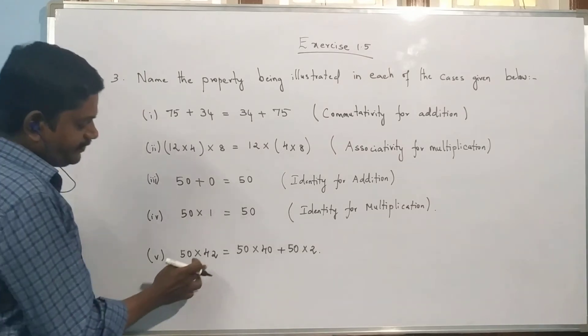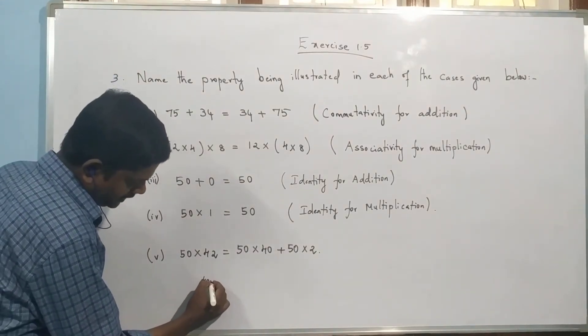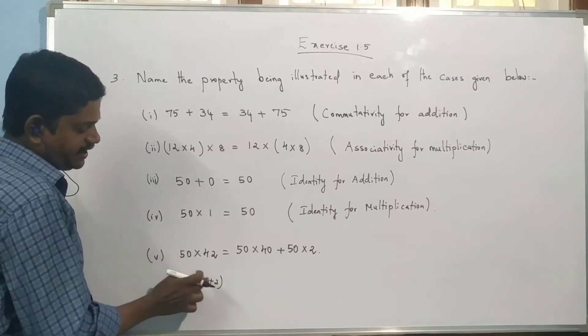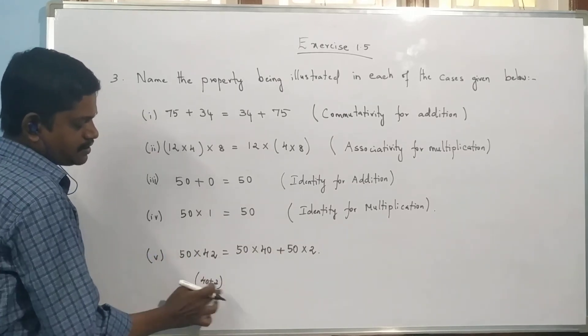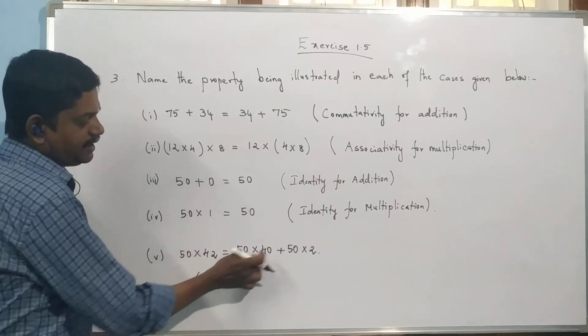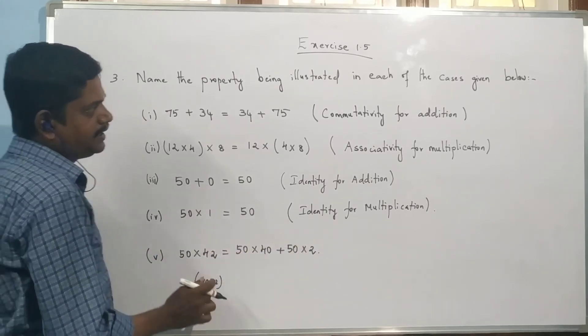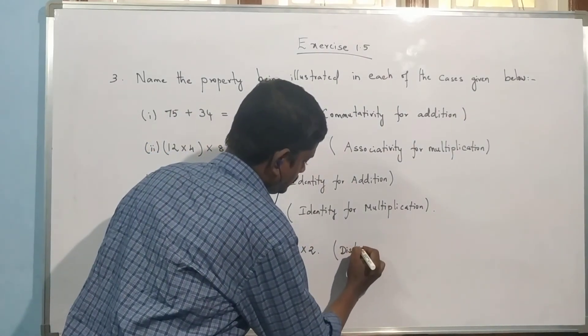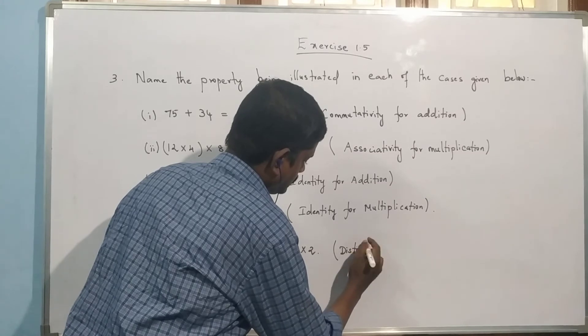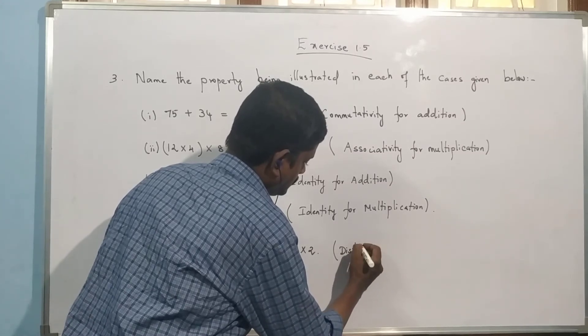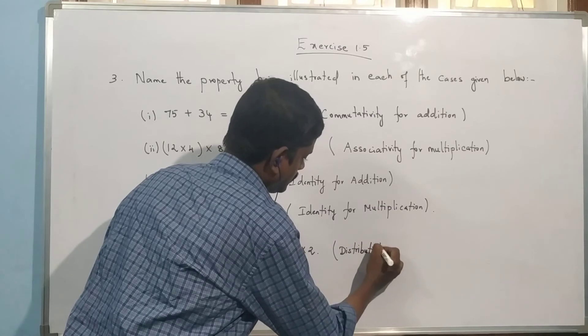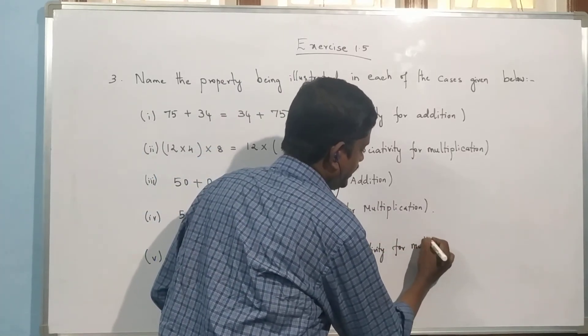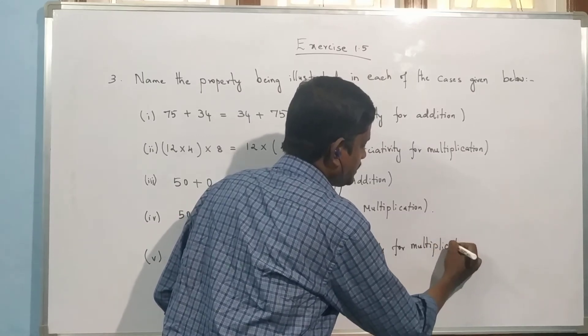Fifth one: 50 into 42. 40 plus 2 equals 42. So 50 into 40 plus 50 into 2. This is 42 broken down. This explains distributivity. Distributivity for multiplication over addition or subtraction.